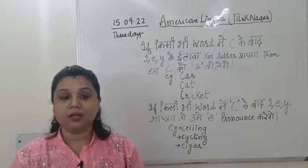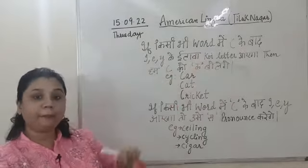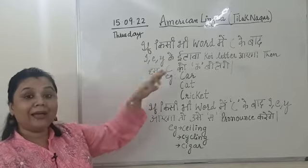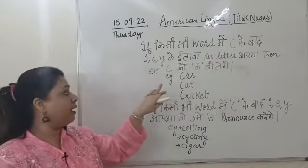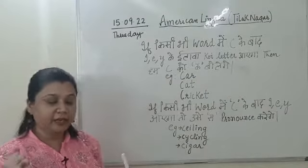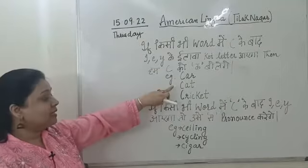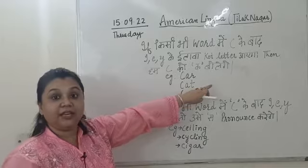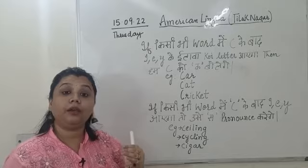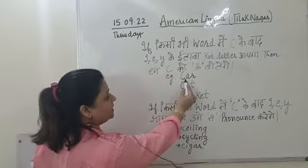If in any word you have C followed by any letter other than I, E, or Y, then we pronounce C as 'ka'. For example, C-A-R as 'car', C-A-T as 'cat', C-R-I-C-K-E-T as 'cricket'. So here you can see that after C we are getting A, then A again, then R.